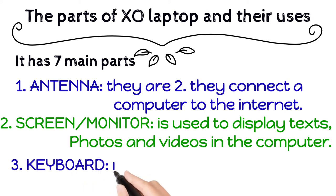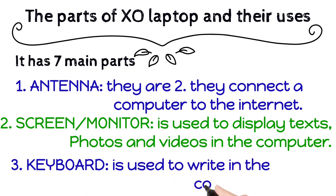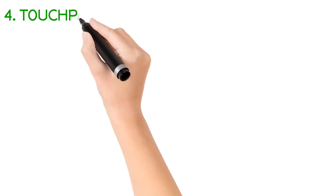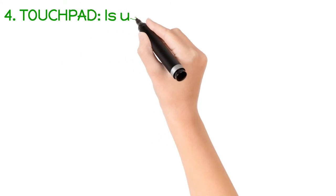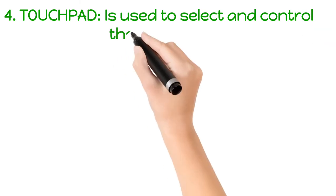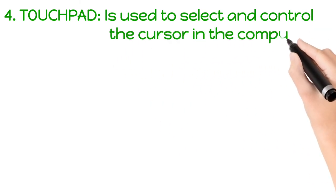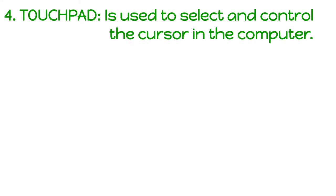We also have the keyboard. A keyboard is used to write in the computer. We also have the touch part. A touch part is used to select and control the cursor in the computer.